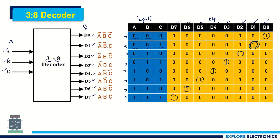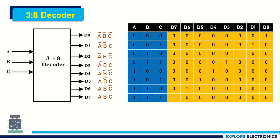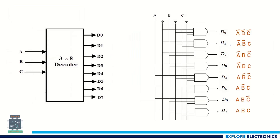Similarly, for all the different outputs we can write the minterm expressions. To implement the circuit, we need to use gates. I am generating A, B, C and Ā (A-bar), B̄ (B-bar), C̄ (C-bar) lines. D0 equals Ā B̄ C̄, so taking Ā, B̄, C̄ into an AND gate gives D0. Similarly, D1 is Ā B̄ C, giving output D1.